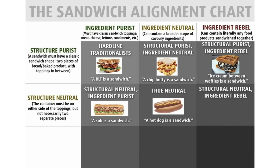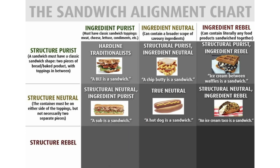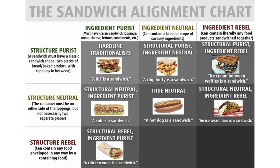Structural neutral, ingredient rebel — an ice cream taco is a sandwich. I've never heard of an ice cream taco. That looks pretty tasty — I want an ice cream taco now. The structure rebel can contain any food enveloped in any way by a containing food. So a structural rebel, ingredient purist will say a chicken wrap is a sandwich. Okay, so wraps are considered sandwiches.